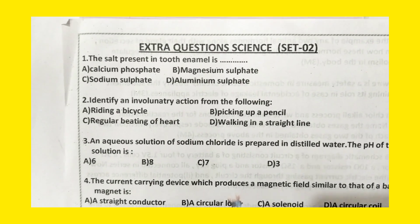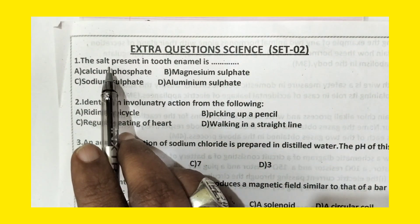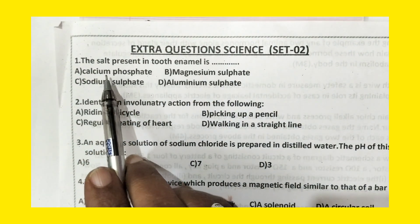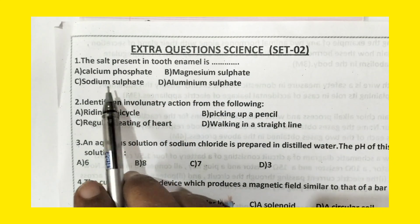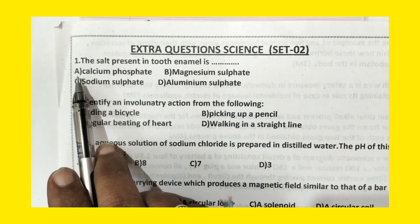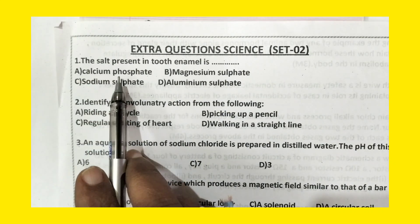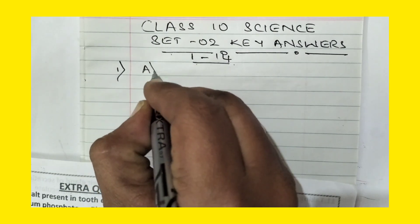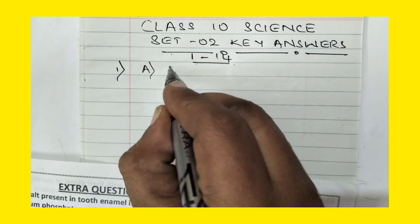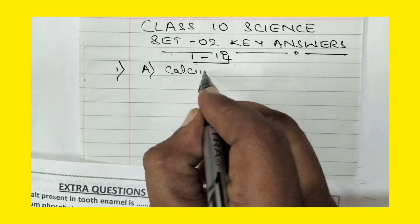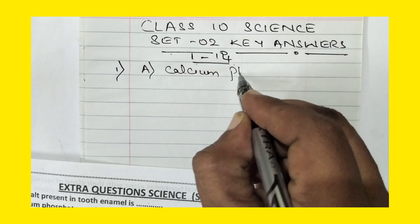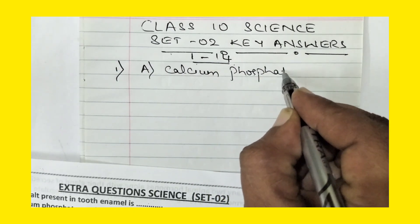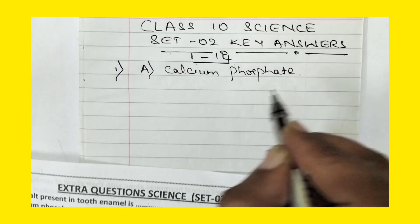The first question of set 2 is: the salt present in tooth enamel is dash. Among these 4 options, the right option is option A, calcium phosphate. So tooth enamel is made up of calcium phosphate.